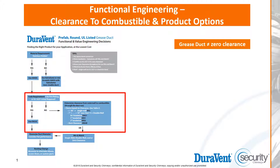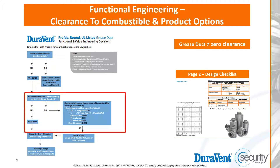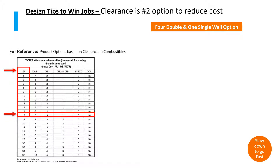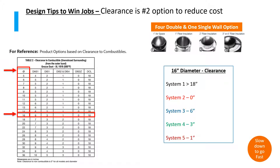The chart we're going to be working from is on the back of the design checklist, and here is that chart. The first thing we're going to do is figure out our diameter — in this case it's going to be 16 inch diameter — and we have four double wall and one single wall option.